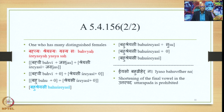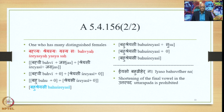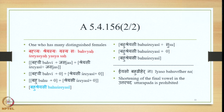The question arises: since this is a Bahuvrihi Samasa where both constituents are Upasarjana, why is the final long E not shortened? The answer is that shortening of the final vowel in the Uttarapada is prohibited, and therefore it is not shortened. So we get the form Bahushreyasi as the masculine form of the word.